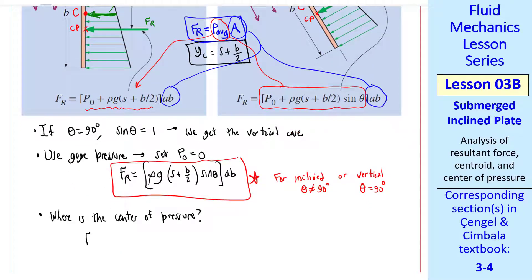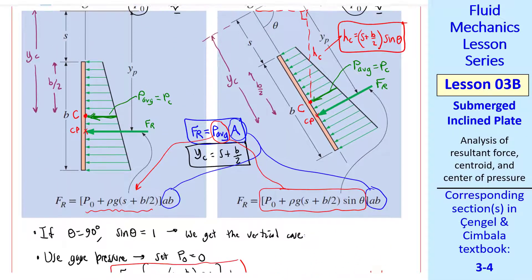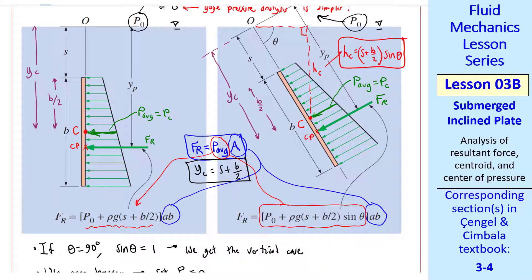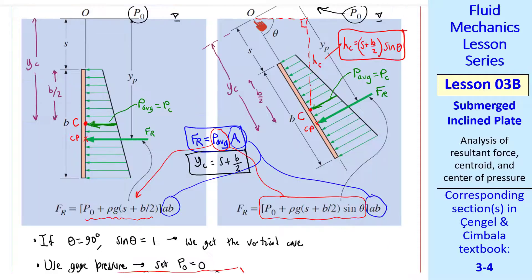Where is the center of pressure? It turns out that for either case, YP equals YC plus IXXC over YCA. That also holds for either the inclined or the vertical case. Keep in mind that this is for the P naught equals 0 case. So the inclined case is not really any more difficult than the vertical case, other than that sine theta factor that appears in a few places. Keep in mind that these Ys are measured from the surface, parallel to the plate, and down towards the plate.